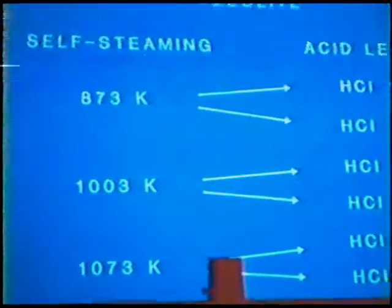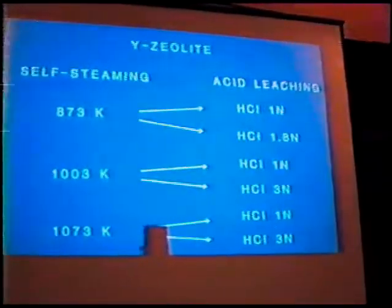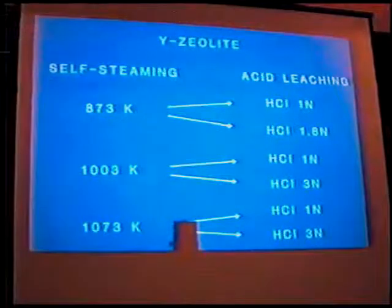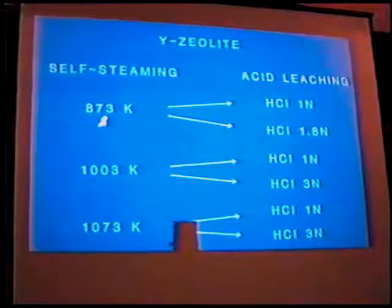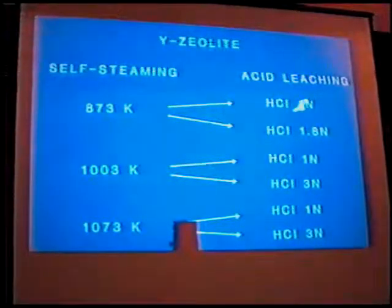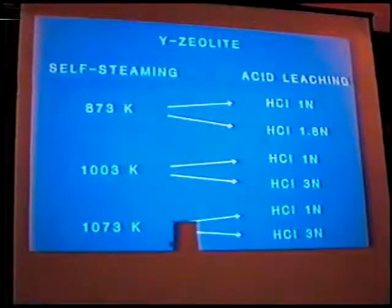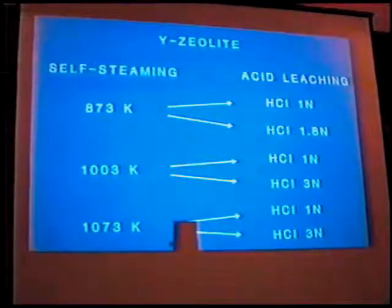These different samples were studied. The first treatment is steam-calcination at three different temperatures. This solid is then treated with acid leaching using HCl acid at different concentrations: 1 normal and 1.8 normal. All these solids were studied with different analytical techniques in order to measure the silicon-to-alumina ratio, the crystallinity, the unit cell parameter, and the pore volume by nitrogen absorption.